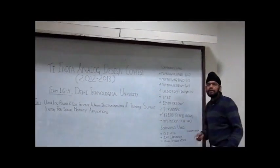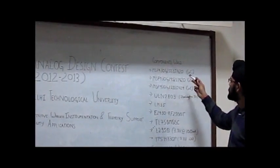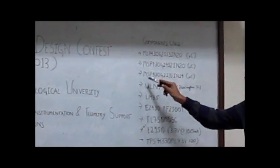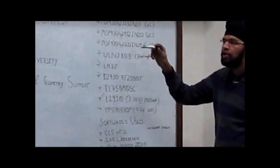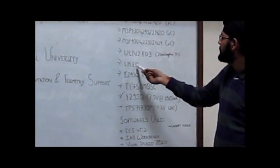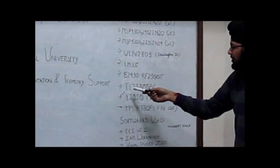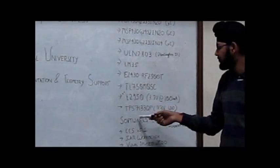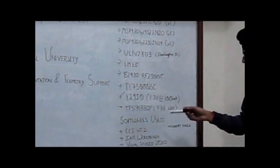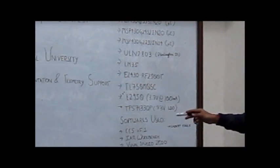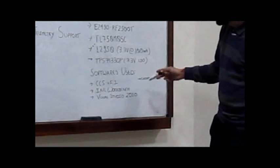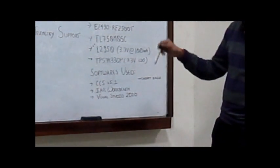This is the component combination used in this project. We used MSP430-G2553-IN20 microcontroller and MSP430-G2452-IN20 microcontroller for LCD interfacing, and MSP430-D2231 for LCD interfacing on node B. We also used LM35 temperature sensor, a Darlington transistor ULN2803, EZ430-RF2500 target board, TL750M05C 5V regulator, LM2950 3V regulator, and TPS7133 3.3V low-dropout regulator. Software tools included Code Composer Studio V5.1 from Texas Instruments, IAR Workbench, VB2010 for creating the PC GUI, and EAGLE PCB for schematics.